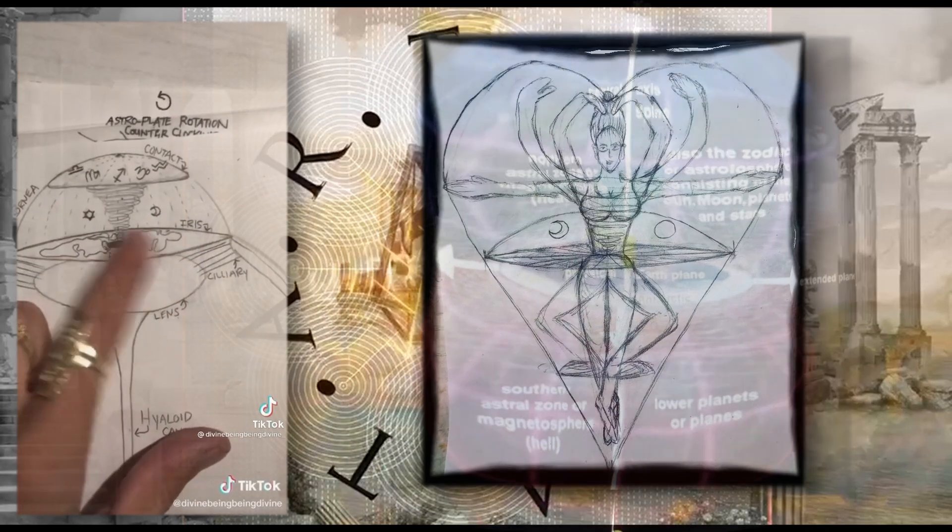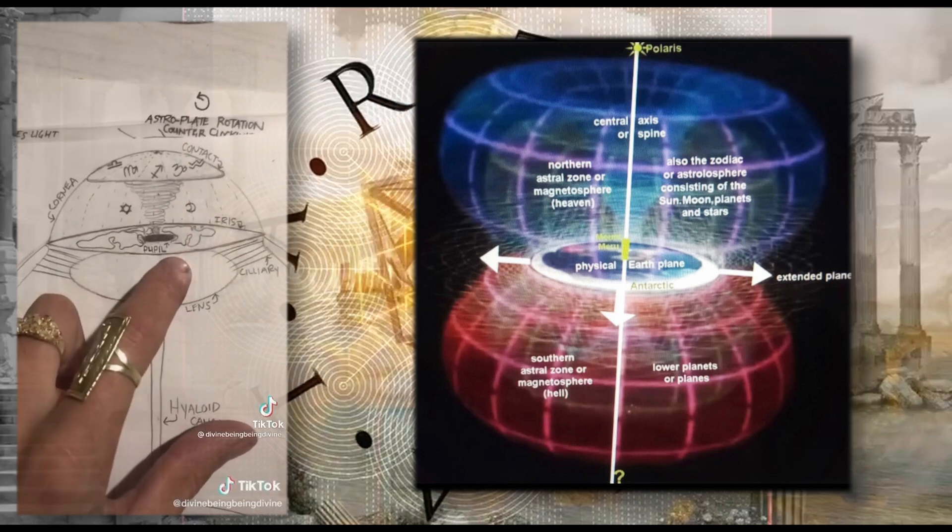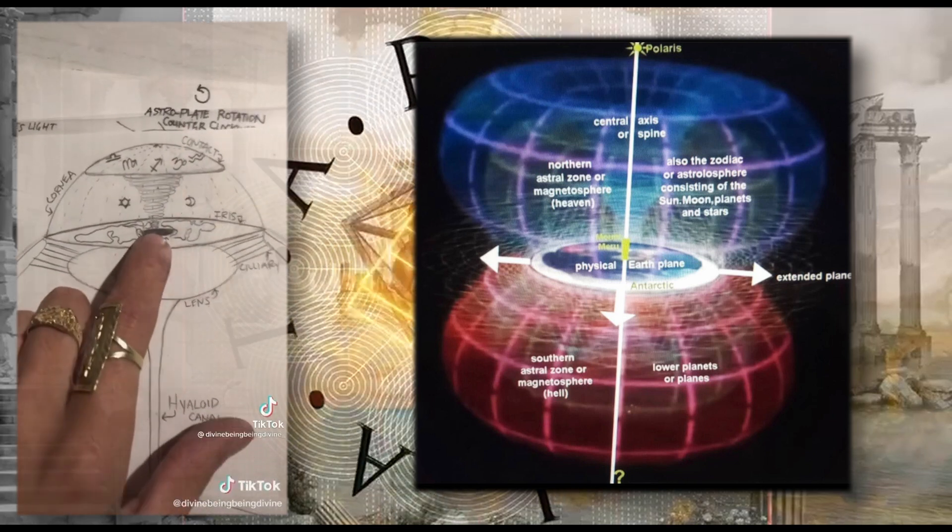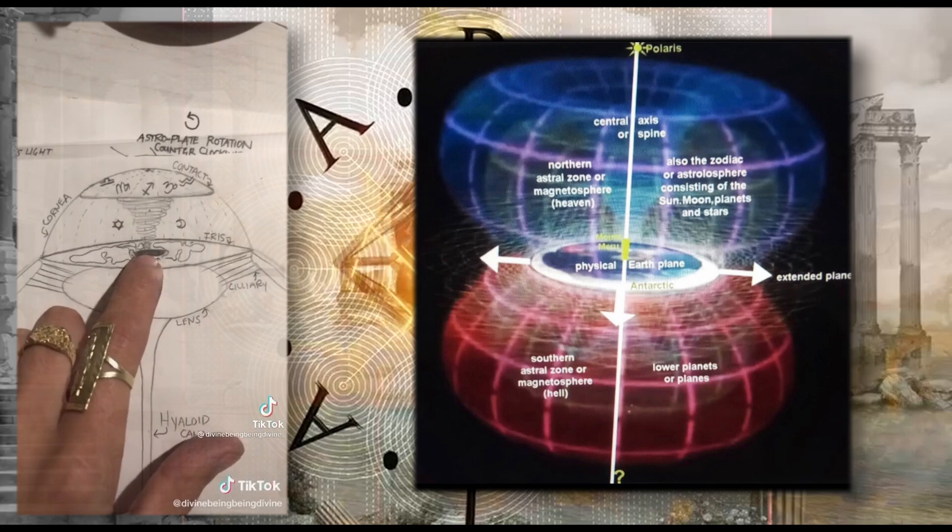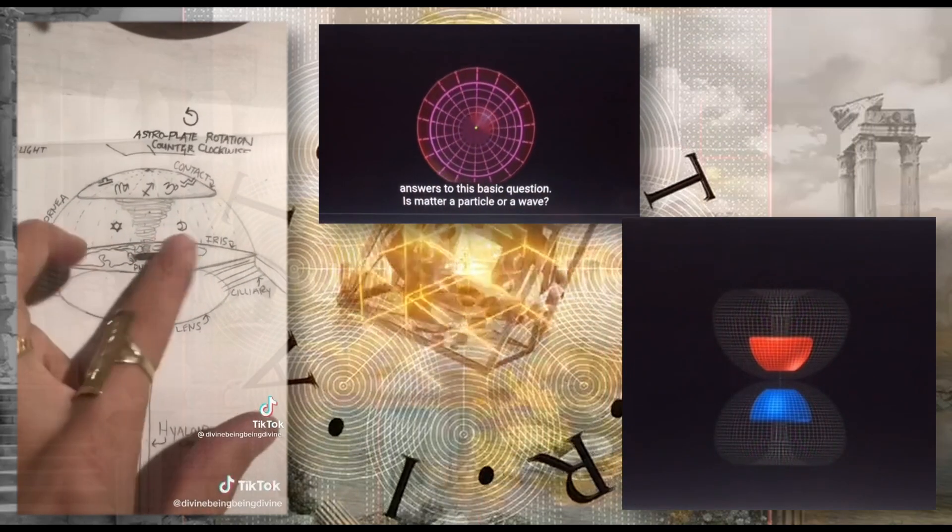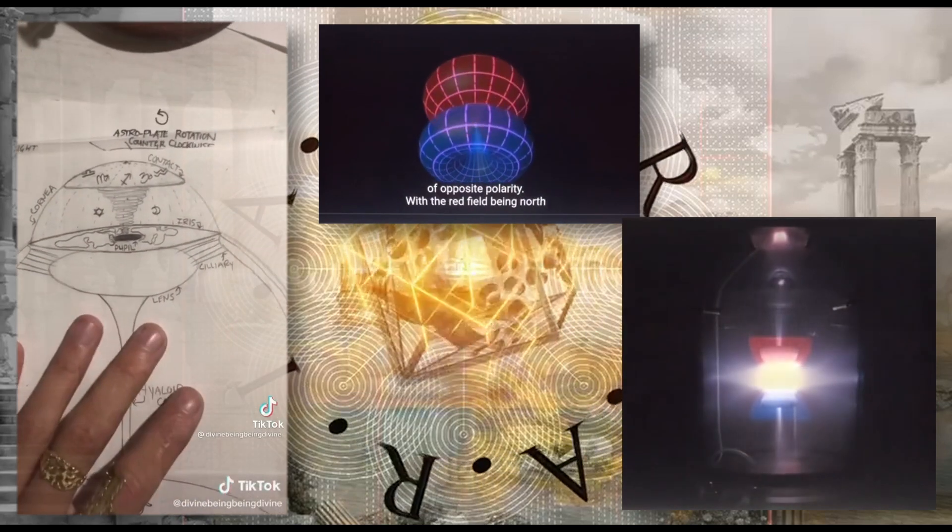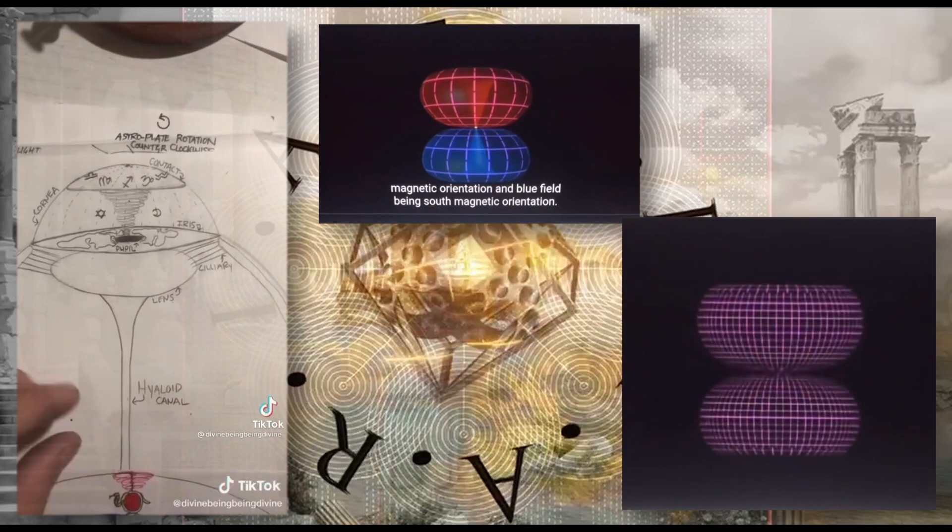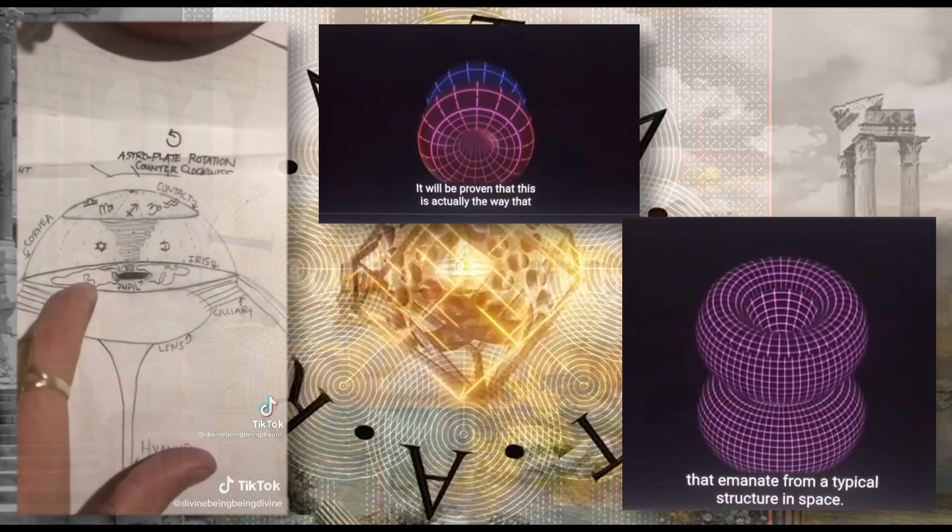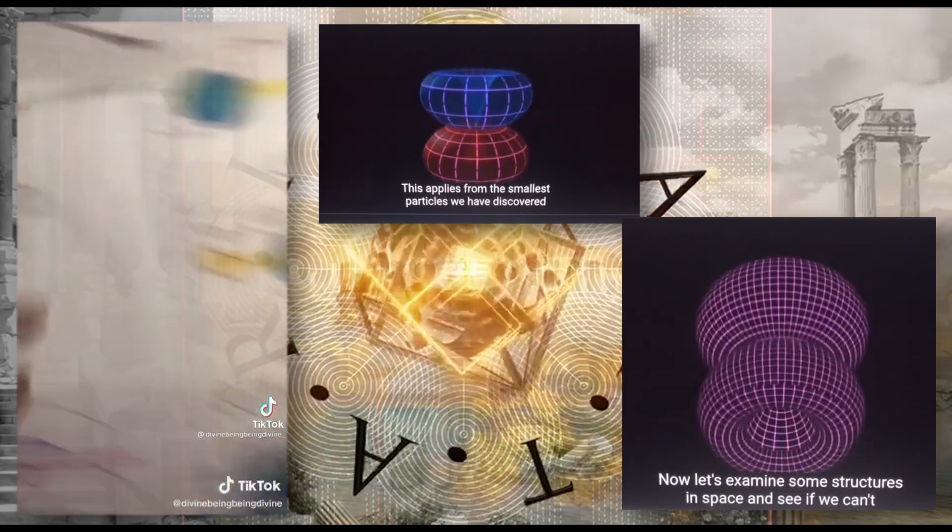Plato talked about Atlantis. He said the center was Mount Atlas, which is the volcano at the center which produced the whole island of Atlantis - the island of the Atlas. If you Google Atlantis by Plato, he said it was the island, the eye-land of the Atlas, which is the whole world. That's right.